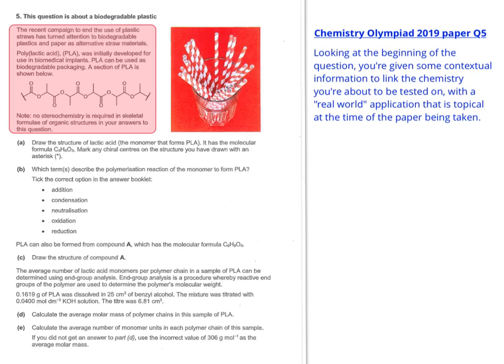So normally what happens in a Chemistry Olympiad question is you'll be given some contextual information to link the chemistry you're going to be tested about to something that's going on in the news. So like I mentioned a bit earlier, the big story in the environment at the moment, apart from obviously the climate emergency, is going to be the reduction in the use of single-use plastics.